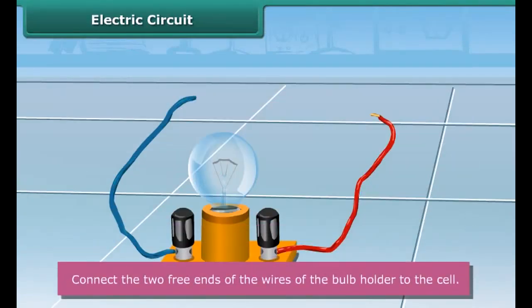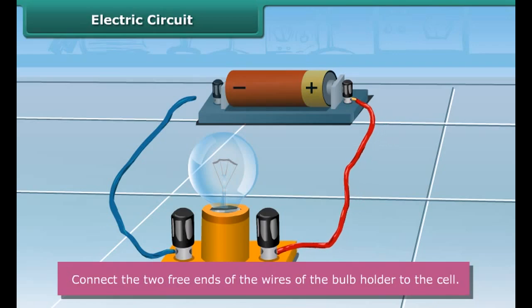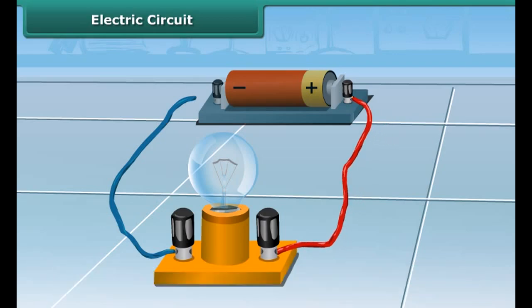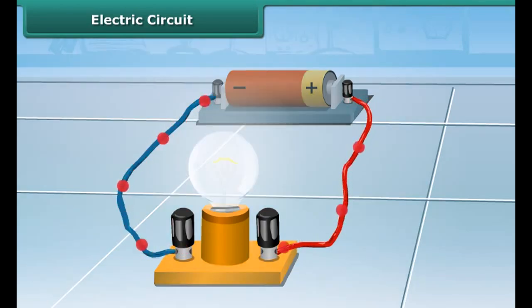Finally, connect the free end of one wire to the positive terminal of the cell and the free end of the other wire to the negative terminal of the cell. This may be done with the help of a rubber band or an adhesive tape. After the connection, you can see that the bulb lights up.